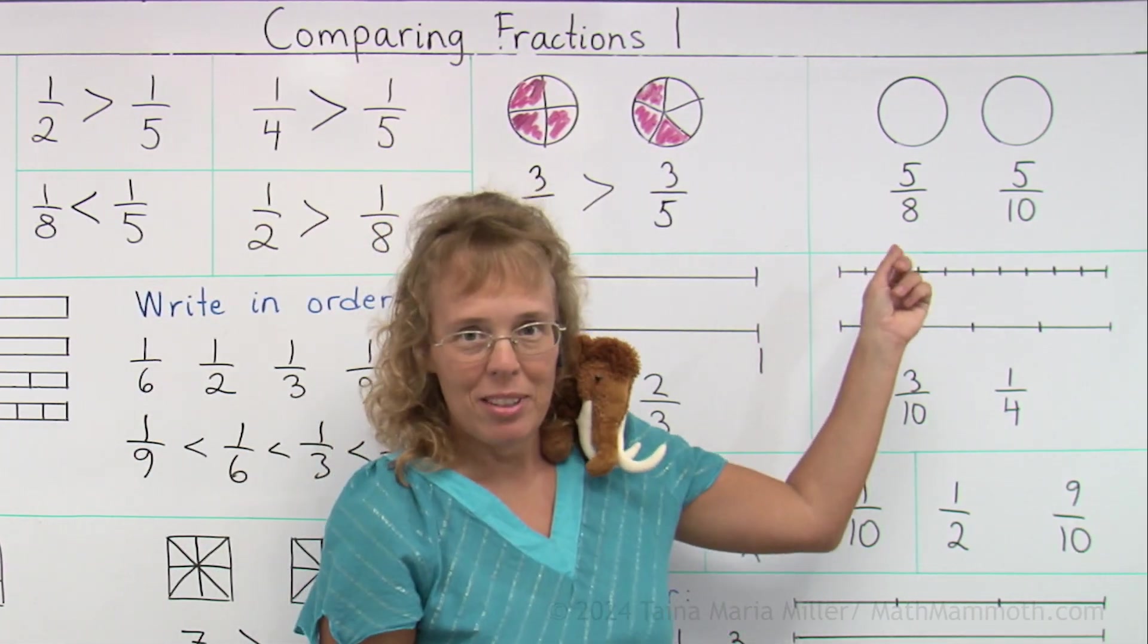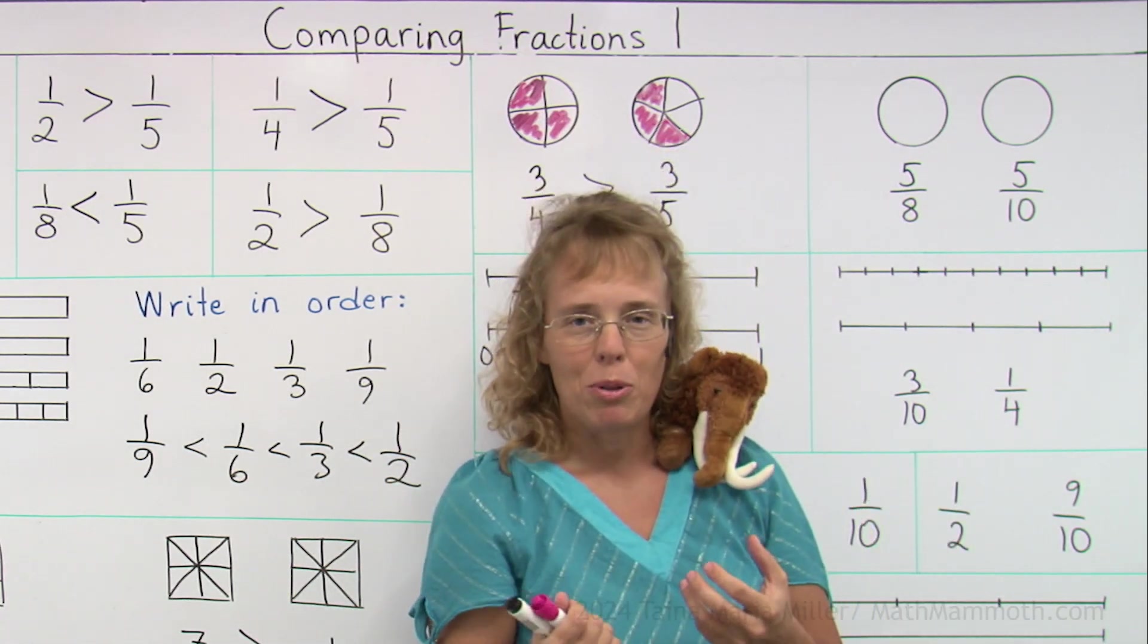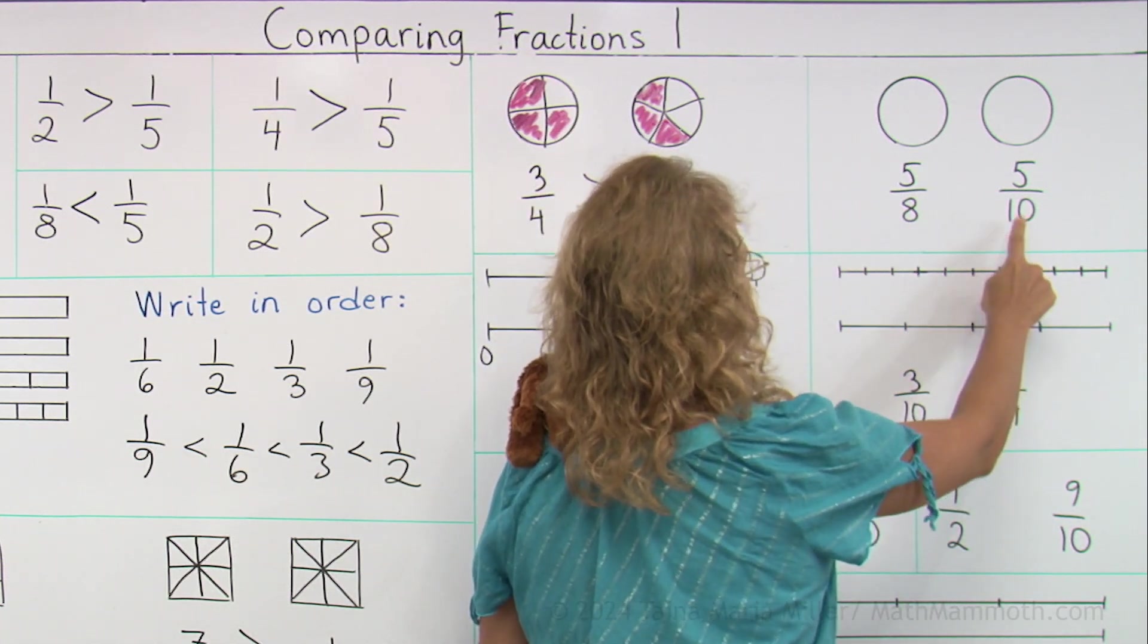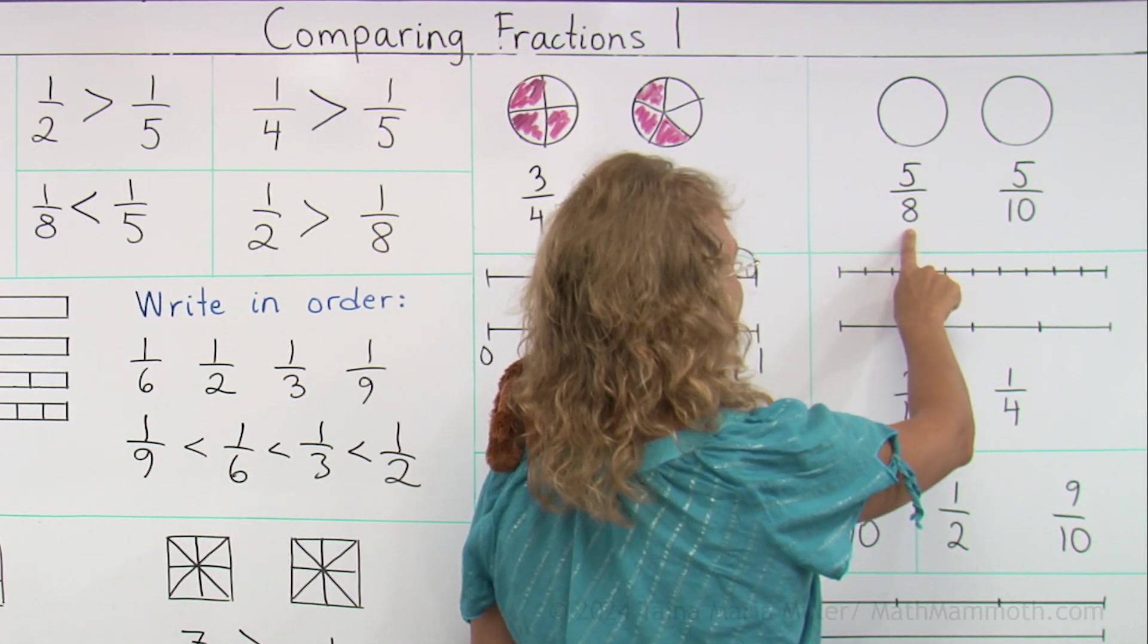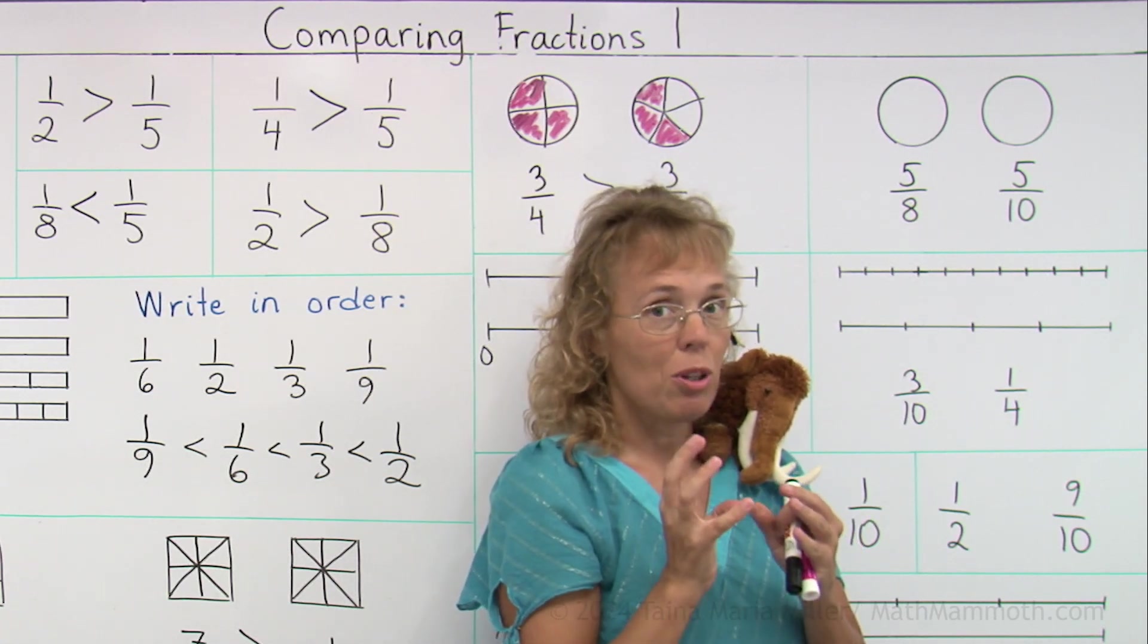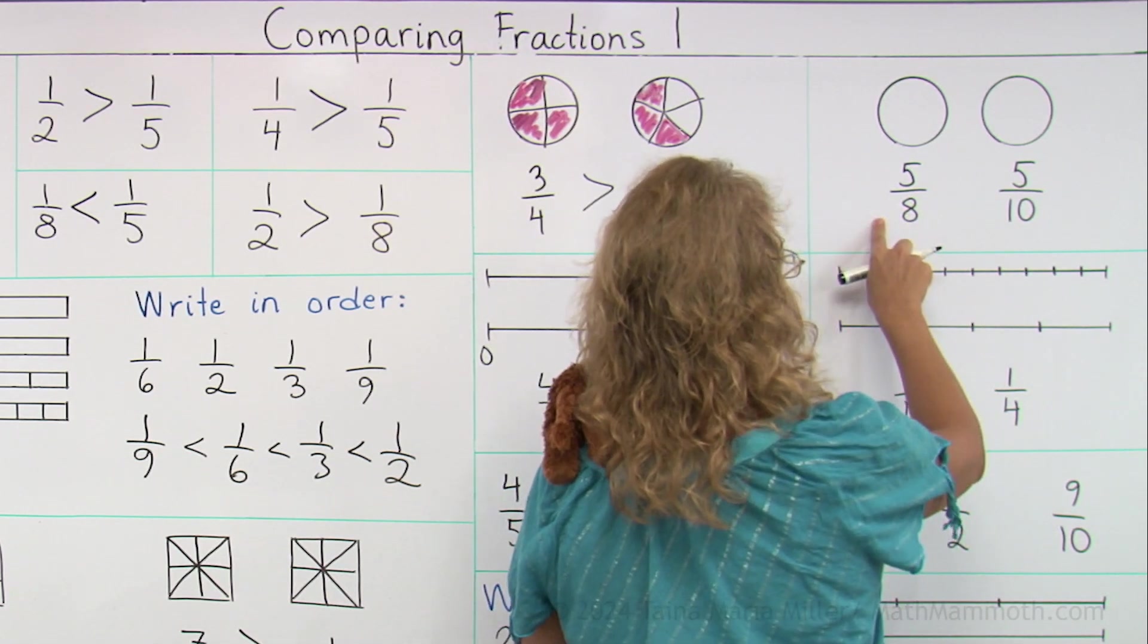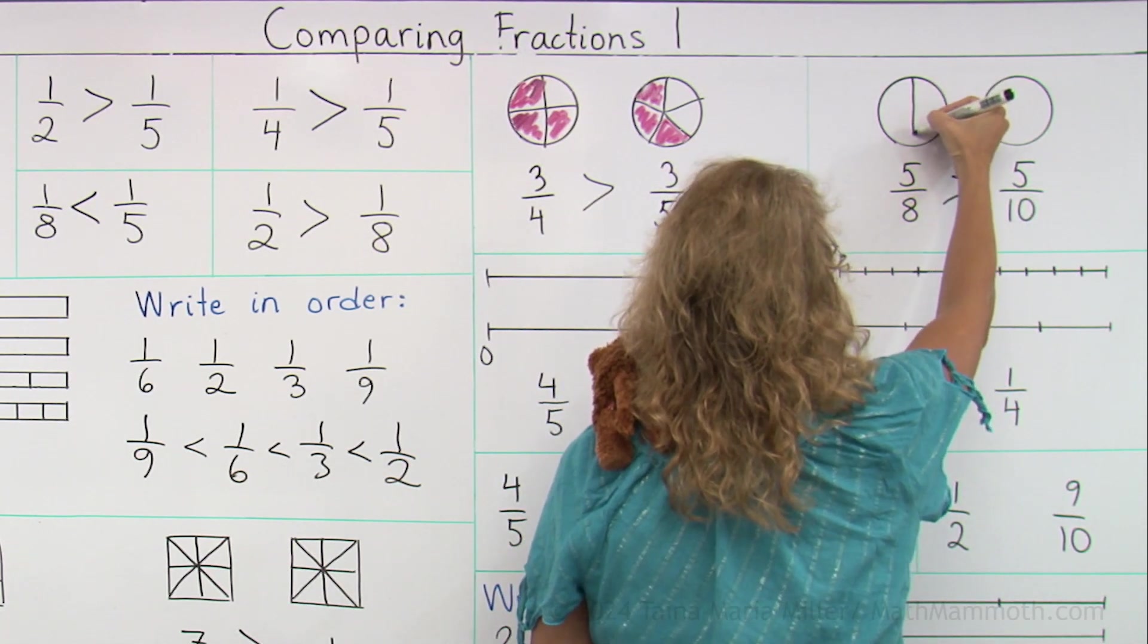And you can use the same thinking here. Five eighths and five tenths. Which one will be more? These are different kinds of pieces, but there's the same amount of them. Five pieces, five pieces. These are eighths, these are tenths. Is one tenth or one eighth more? One tenth is the smaller piece. One eighth is the bigger piece. So five of those bigger pieces is more than five of those smaller pieces.